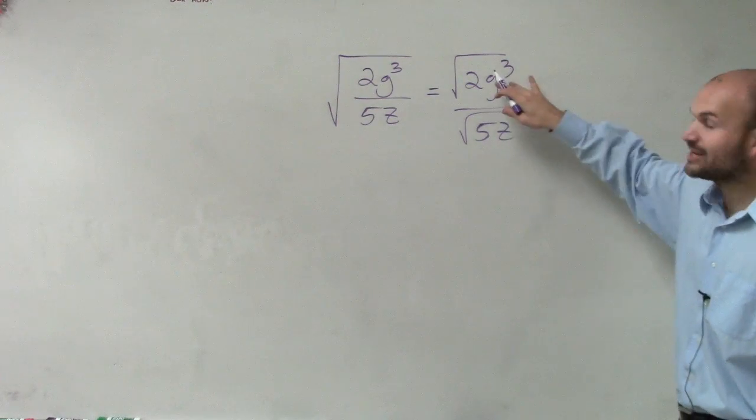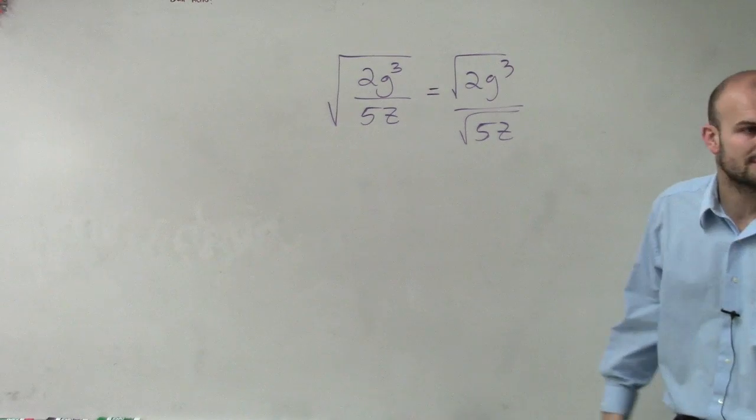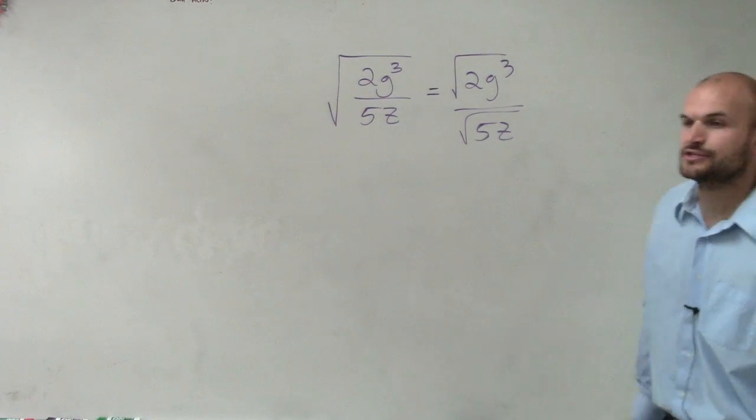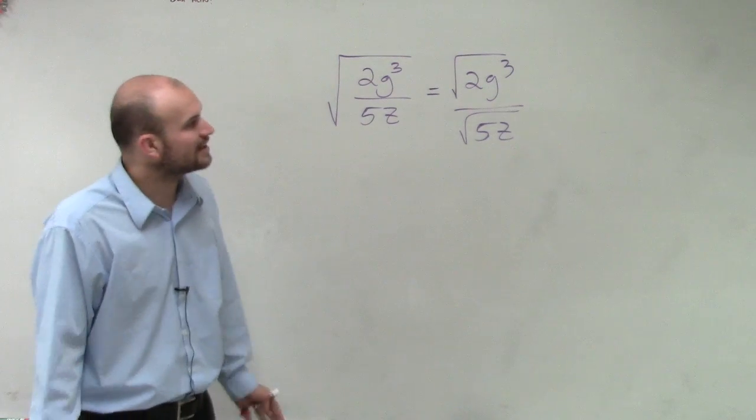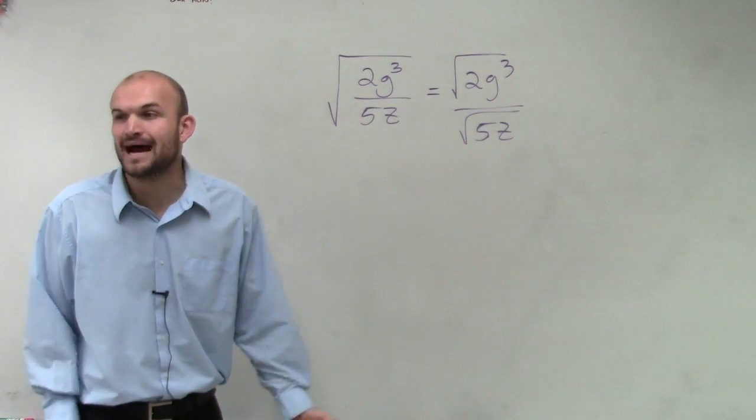what I'd like you guys to do is think about it like this. If we write this down, we can simplify 2g cubed, right? But can we simplify the square root of 5z? No, we can't. So Ava, what you're going to want to do is we need to get this off our denominator.